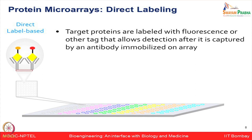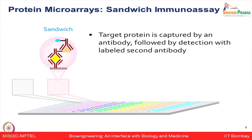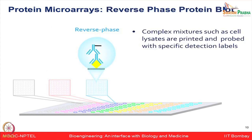Let us talk about a different type of protein microarray platform — the direct labeling-based method. In direct labeling, the target proteins are labeled with fluorescence or other tag molecules which allows detection after capture on the antibody immobilized on the array surface. Additionally, you can use the sandwich immunoassay where the target protein is captured by an antibody followed by detection with labeled secondary antibodies. Another clinically relevant approach is reverse phase protein arrays, in which complex mixtures such as cell lysates are printed and probed with specific detection labels, useful for quickly detecting specific proteins out of complex samples.